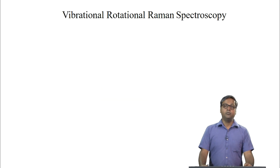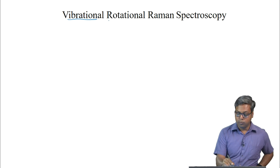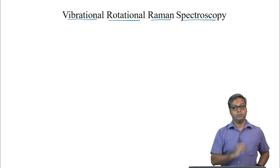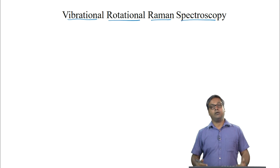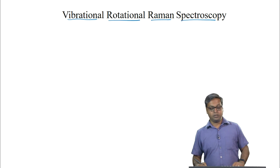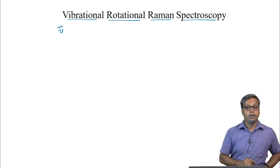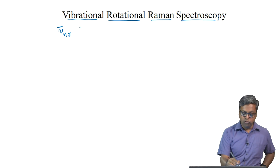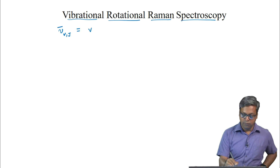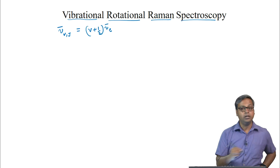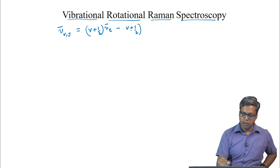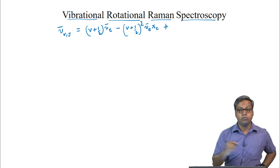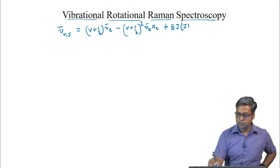Now let us move on to vibrational-rotational Raman spectroscopy. The fine structure is rarely resolved except in the case of diatomic molecules. We can write the energy expression as a function of vibrational quantum number V and rotational quantum number J: nu-bar(V,J) = (V + 1/2)*nu-bar_E minus (V + 1/2)^2 * nu-bar_E * chi_E plus the rotational term B * J * (J+1).